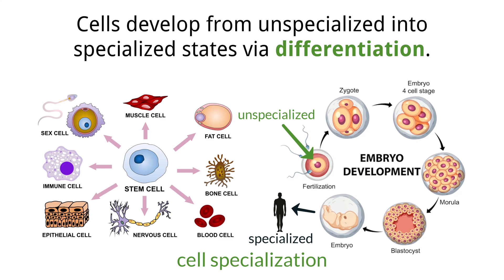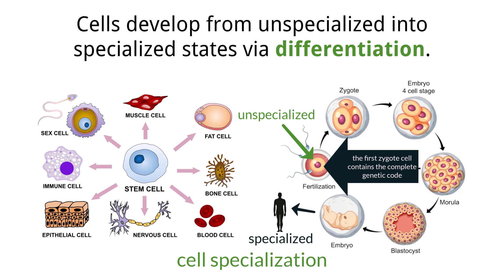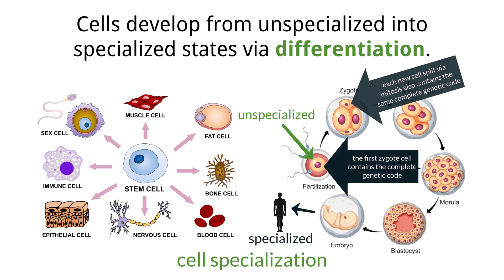So how did this happen? Starting off with the first zygote cell, it contained a complete sequence of DNA that is our genetic code. That cell split via mitosis many times, which is a process that involves copying the DNA, so that each new cell created also contains the same genetic code.